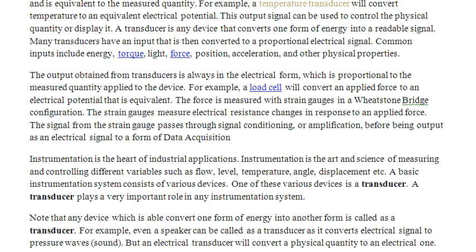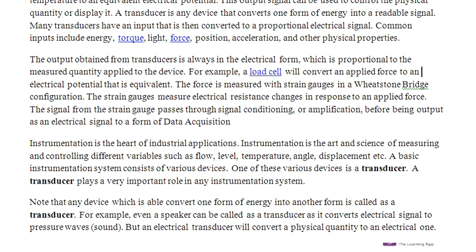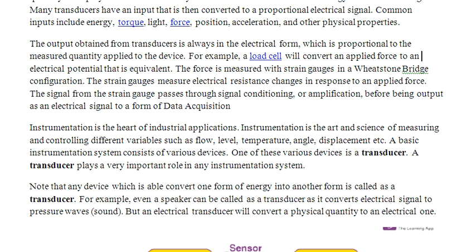For example, a load cell converts an applied force to an electrical potential. In this case, the force is measured with strain gauges in a Wheatstone bridge configuration. The strain gauge measures the electrical changes in response to the applied force. These are the general ideas about transducers.